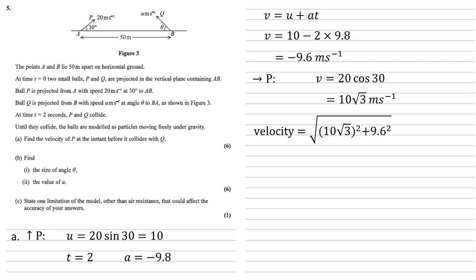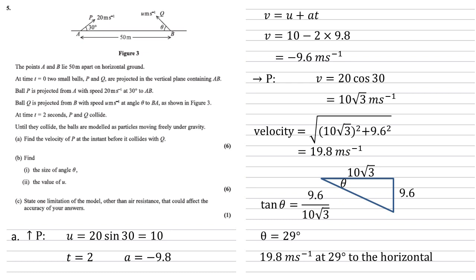So the final velocity is going to be the square root of the sum of the squares of our two answers. So the square root of the square of 10 root 3 plus the square of 9.6, which equals 19.8 metres per second. But we also need to find the angle that P is moving at. So we know we've got our vertical velocity of 9.6 downwards and a horizontal velocity of 10 root 3. So putting it in a triangle like this, we can see, because they're perpendicular to each other, we've got a right angle triangle. So to find theta, we're going to do tan theta equals 9.6 over 10 root 3, giving us theta is 29 degrees. So our final answer is 19.8 metres per second at 29 degrees to the horizontal.